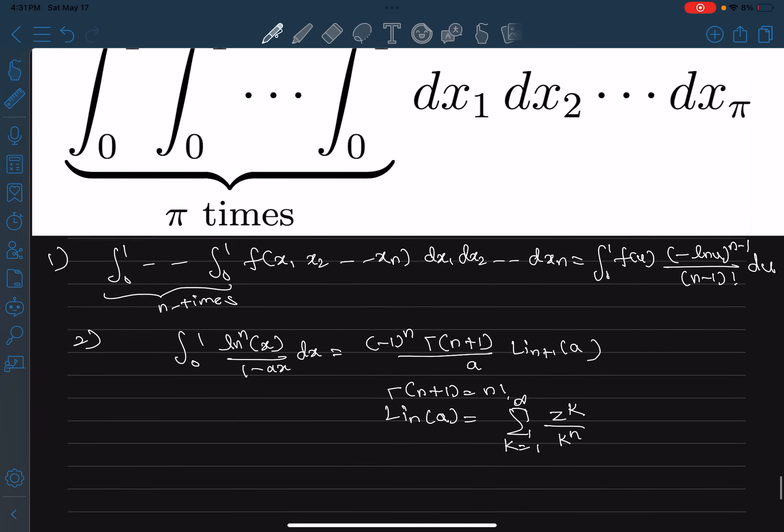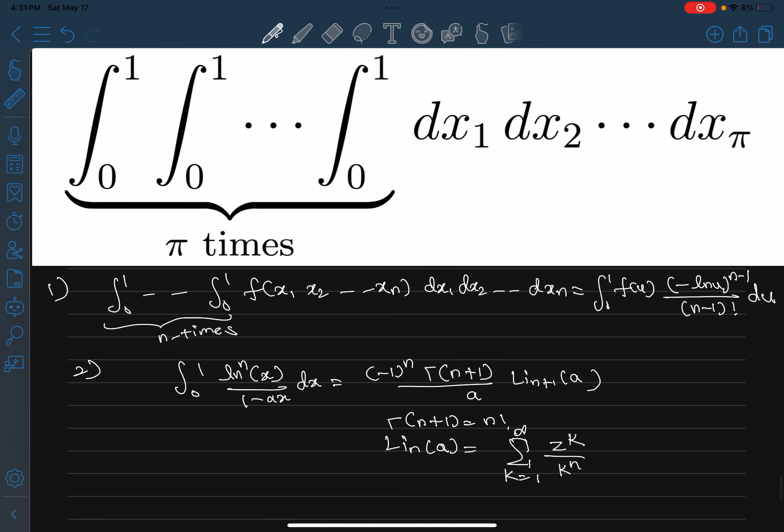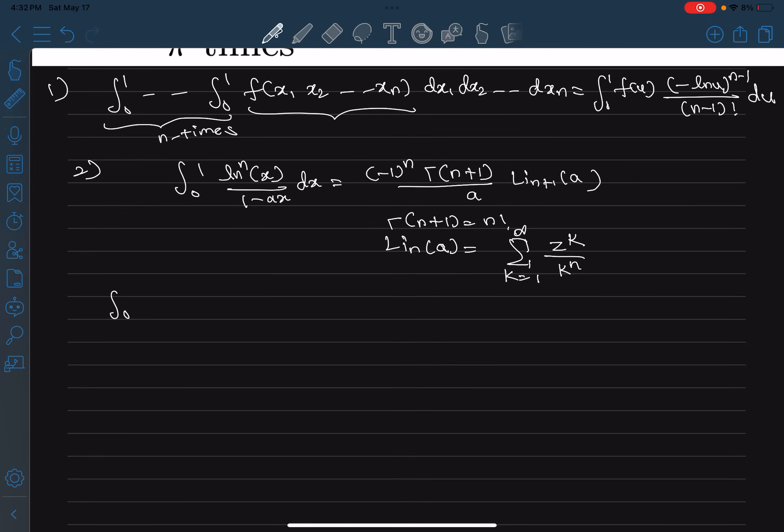So let's see how we can destroy this integral. First of all, we can use the first formula. The function over here is just 1 in our case. So if we use the first formula, and in this case our function is just 1 and dx₁ up to dx_π, this is π times. Our f is just 1 so that means in the other form our function will still be just 1, and then we will have minus ln of u - we will have π minus 1 by π minus 1 factorial.